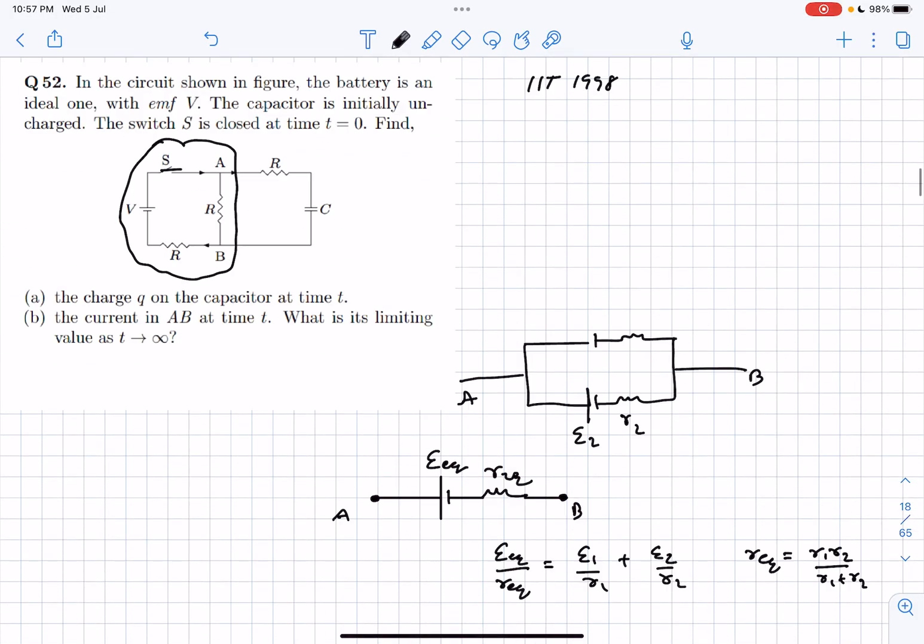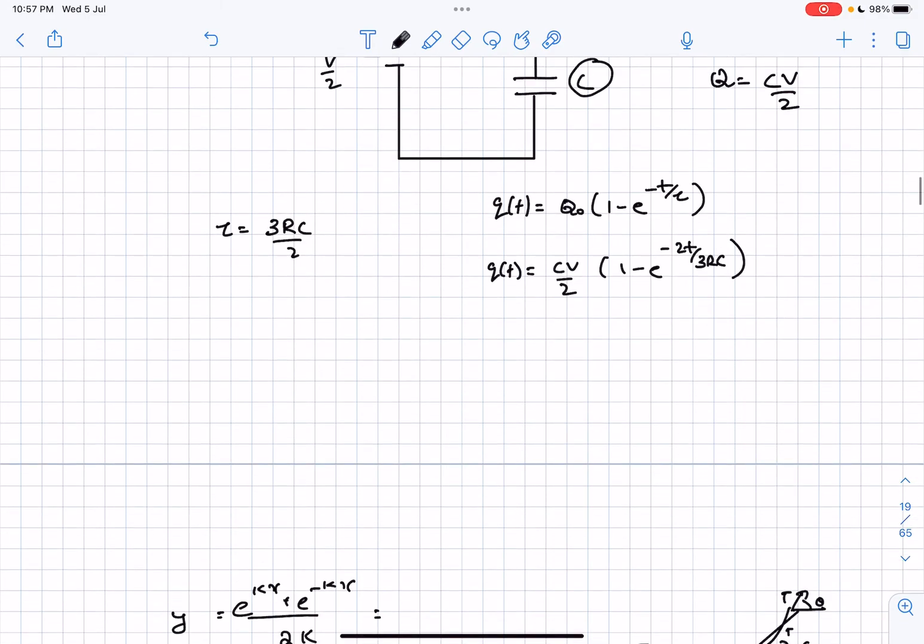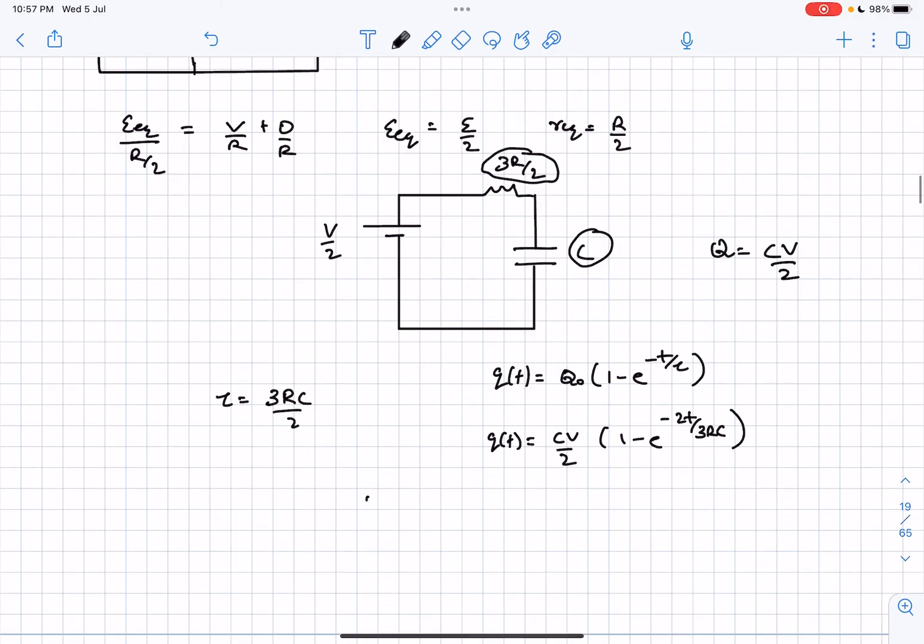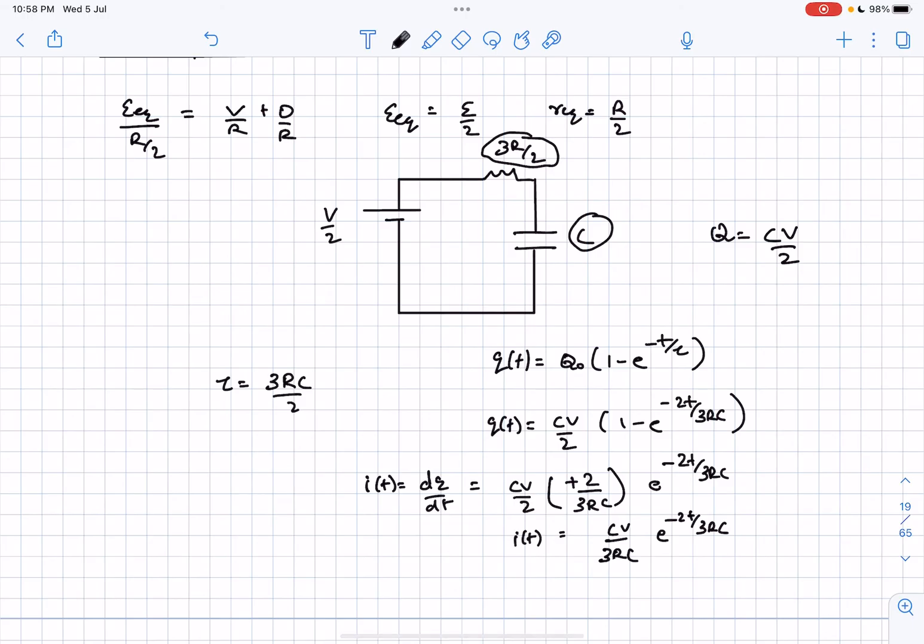That was problem number one. The second question is we have to find the current in AB at time t. To find the current as a function of time, differentiate the charge. Now we have current as a function of time as well.